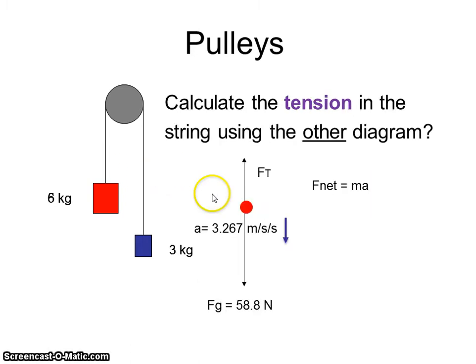Let's calculate the tension over on this side and see if we see something. The red guy is accelerating downward. What does that mean? My up force has to be less than my down force. Now we do F equals M times A. Take the mass of 6 times the acceleration. We get 19.6.